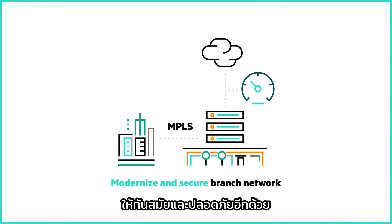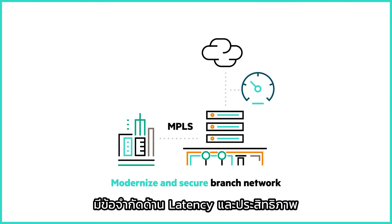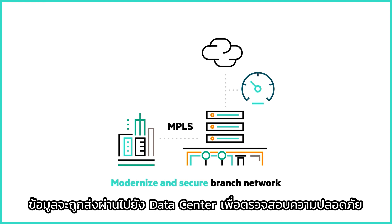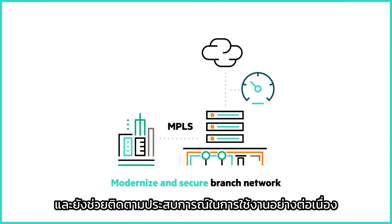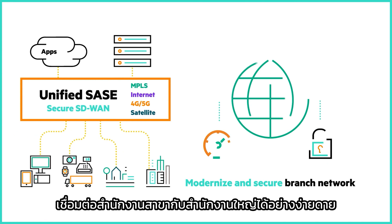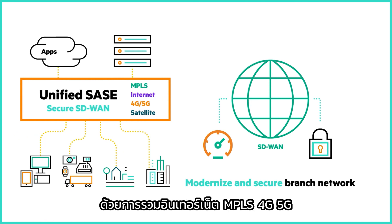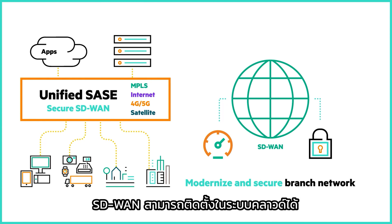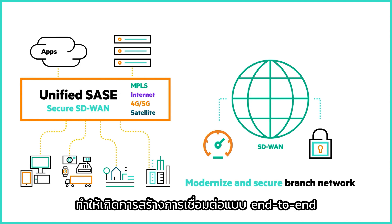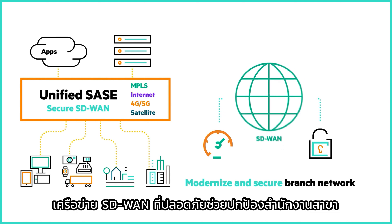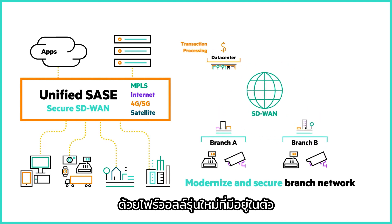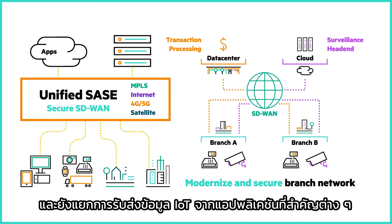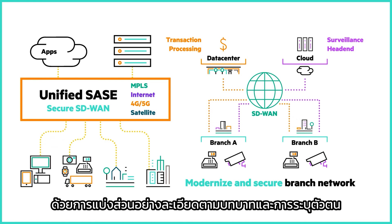SASE also helps modernize and secure network in-branch offices. Traditional MPLS architectures introduce latency and performance limitations when backhauling cloud traffic to the data center for security inspection. SASE eliminates this need and continuously monitors digital experience. SD-WAN enables organizations to easily connect branch offices to headquarters by combining MPLS, internet, 4G, 5G, and satellite links while intelligently steering traffic to the cloud. SD-WAN can even be deployed in cloud service providers, creating an end-to-end connection and enabling multi-cloud networking. Secure SD-WAN safeguards branch offices with a built-in next-generation firewall, enabling organizations to replace legacy firewalls. It also isolates IoT traffic from critical apps with fine-grained segmentation based on roles and identity.